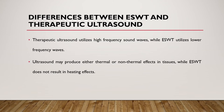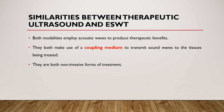Therapeutic ultrasound utilizes high-frequency sound waves at either 1 or 1.1 megahertz or 3 or 3.3 megahertz. By contrast, shockwave frequency parameters range from 1 to 12 Hz, and sometimes beyond depending on the unit. Ultrasound may produce either thermal or non-thermal effects in tissues, while shockwave does not result in heating effects — it only produces non-thermal effects. Both modalities require a coupling medium — gel — which is inexpensive, helps transmit energy from the transducer or applicator to the tissues, and is used by most professionals.